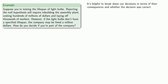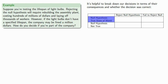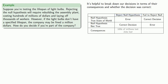It's helpful to break down our decisions in terms of their consequences and whether the decision was correct. Either the null hypothesis is the true state of the world or it isn't, and either we reject it or we fail to reject it. If the null hypothesis is true and we've rejected it, that's an error; otherwise it's a correct decision. If the null hypothesis is not true and we've failed to reject it, that's also an error. With context: if we reject the null hypothesis, whether or not it's true, it will cost the company hundreds of millions of dollars and many jobs.